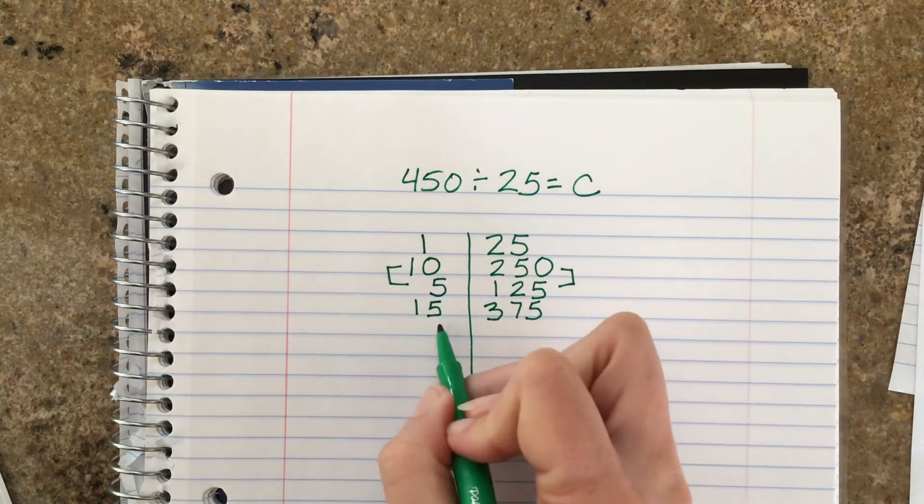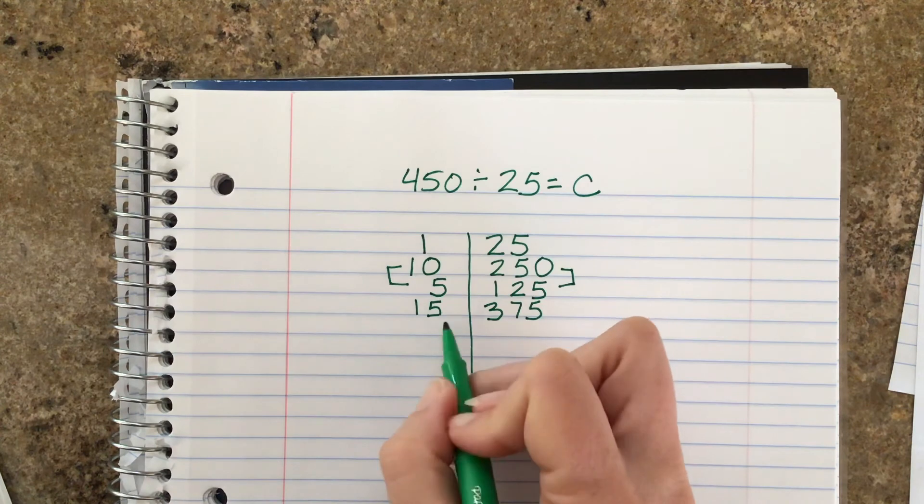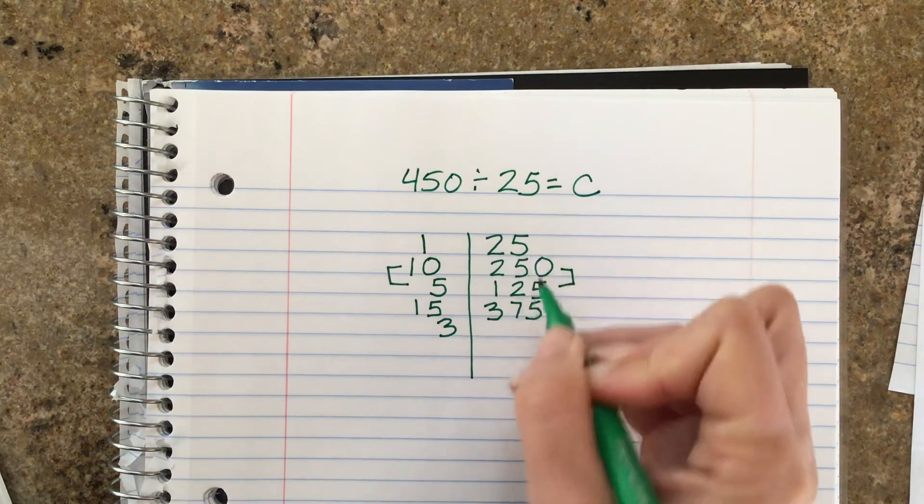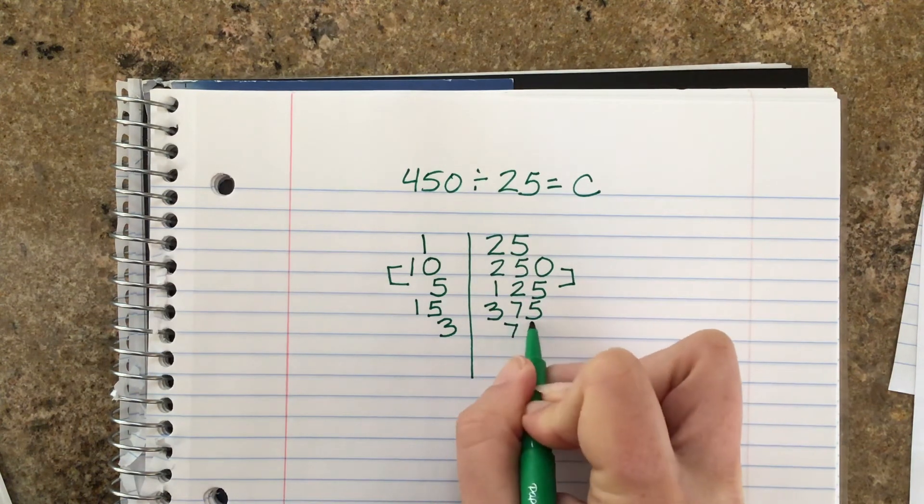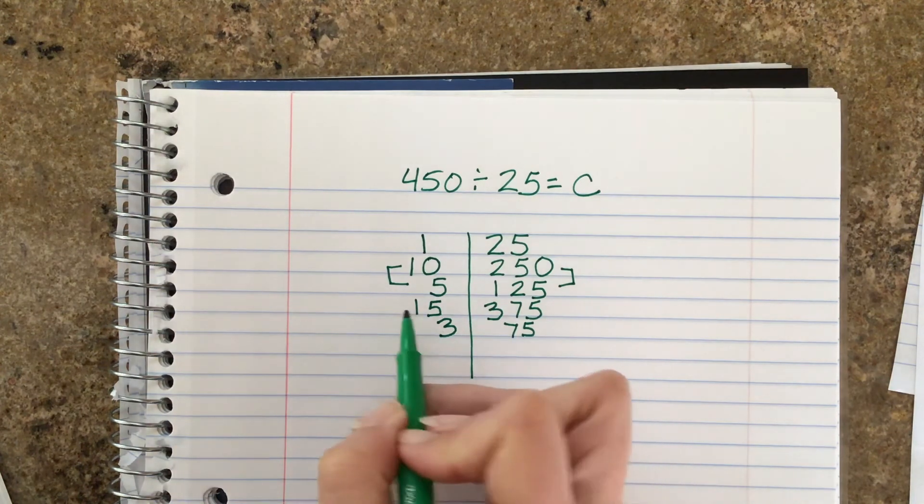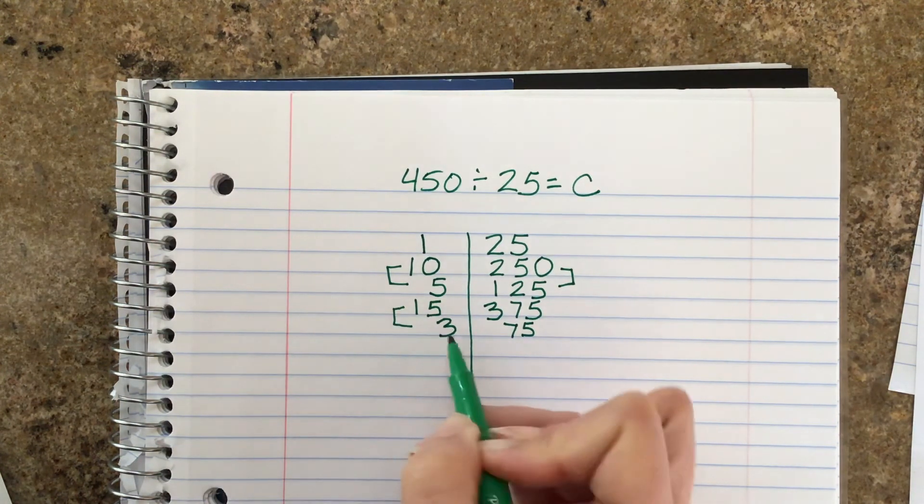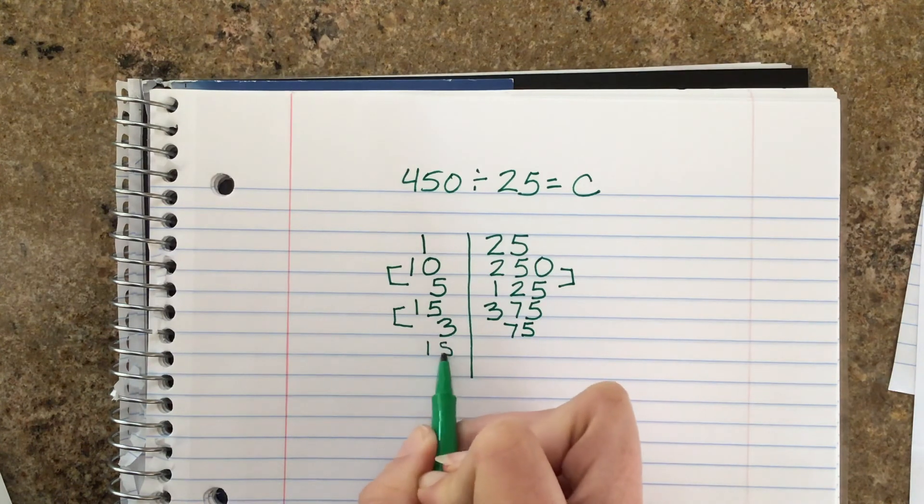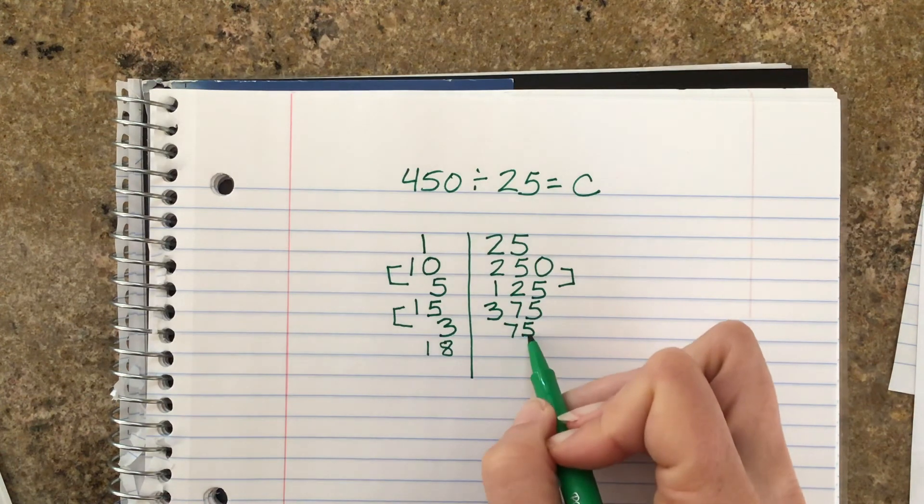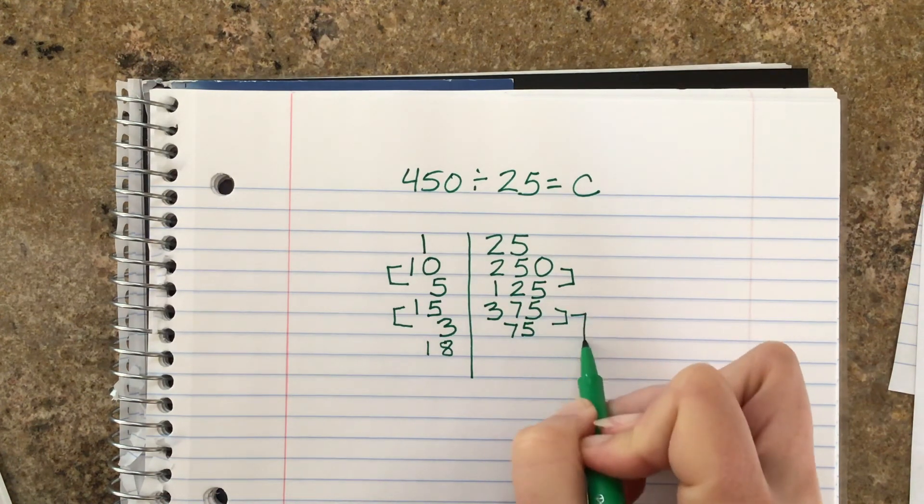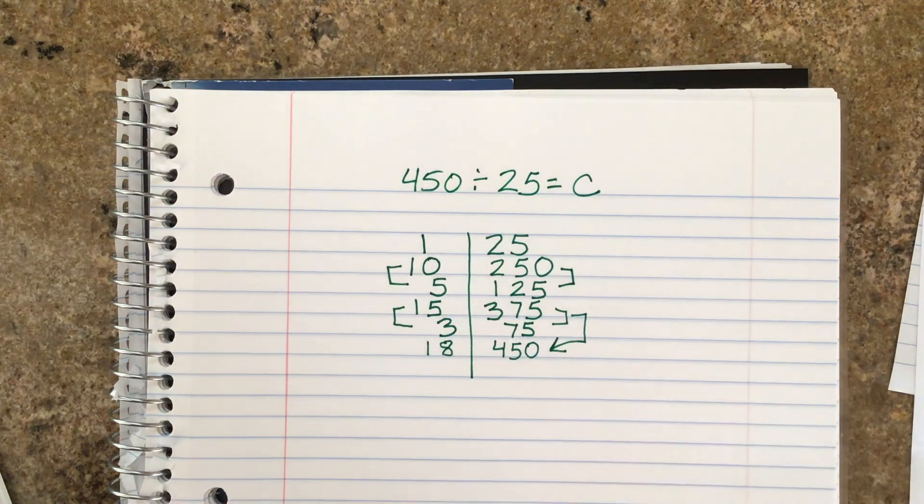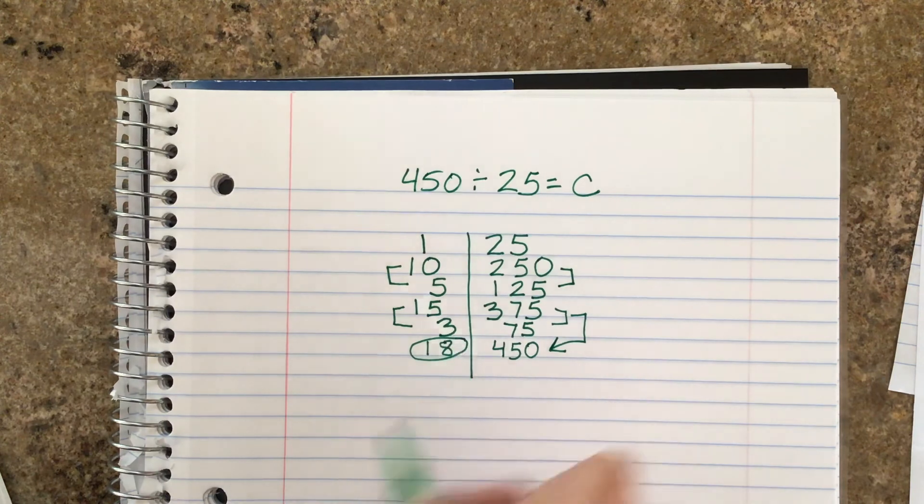So I know from money that if you have three quarters, three 25-cent pieces, I'd have 75 cents. Now if I were to add these two together, 15 plus 3, I would get 18. 375 plus 75 is going to give us 450. There it is, 18 classes.